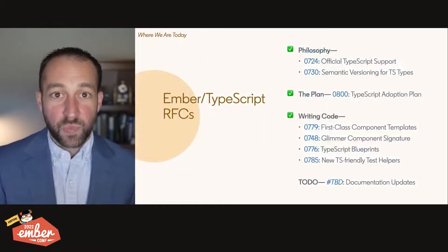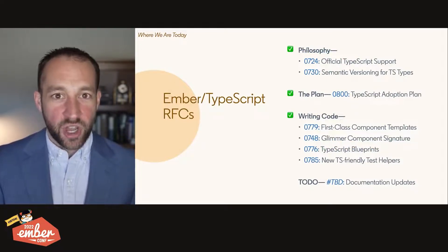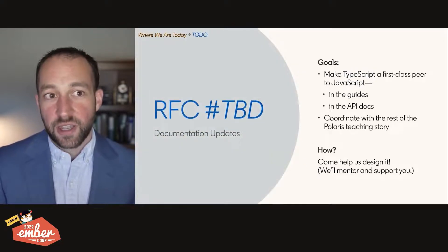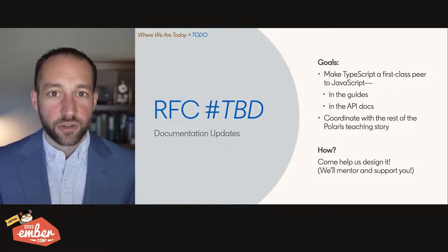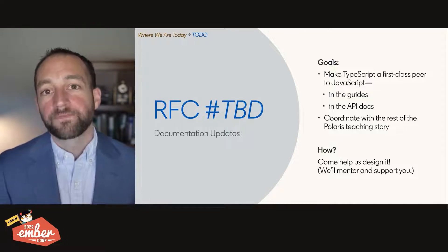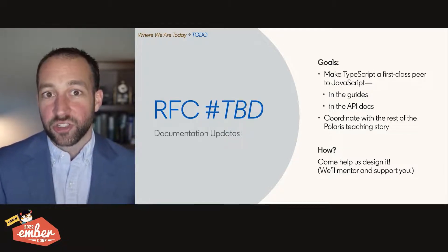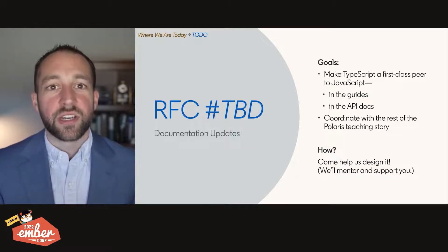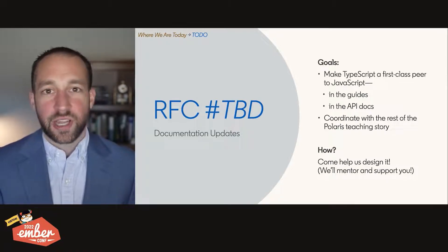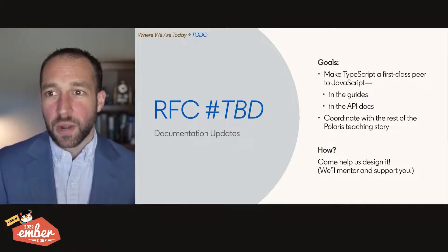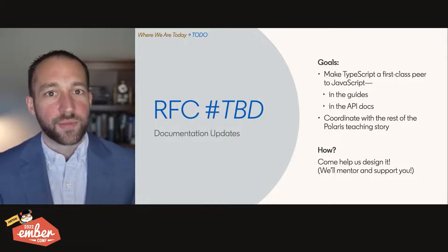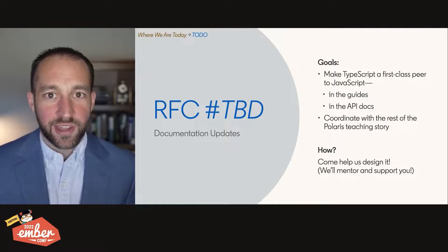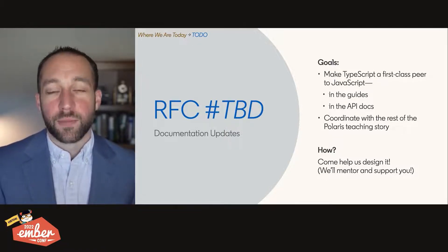That's our updates to code authoring — a pretty good set of things, and as I've said throughout, all of those benefit JavaScript users too. The last part of our story is a documentation update, and this one is far-reaching because our goal was to make TypeScript a first-class peer to JavaScript — that means it needs to be true in our guides and API docs too. We also need to coordinate this with the rest of our Polaris teaching story. This includes being able to have a toggle that shows TypeScript versus JavaScript, different prose in those places, and API docs that know what to do with generic types when presenting to a JavaScript user. There's a lot to figure out, it isn't done yet, so we could use your help. Come work on it with us — the learning team, the Ember TypeScript team, and the Ember Framework team will mentor and support you.